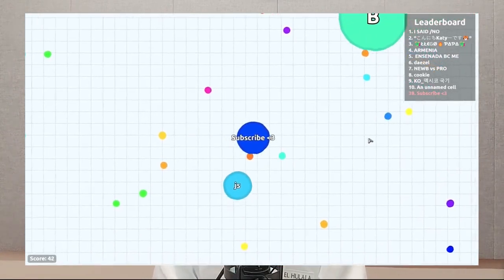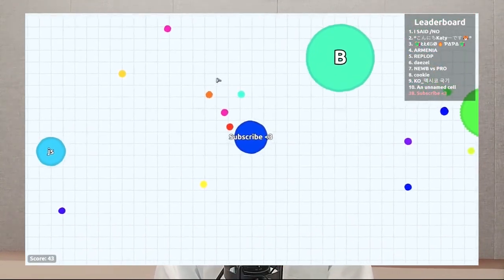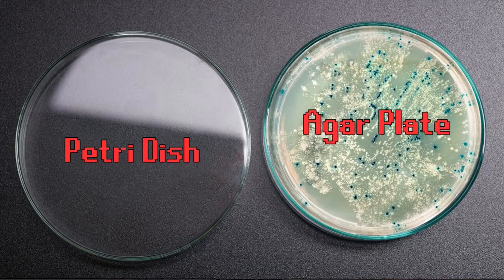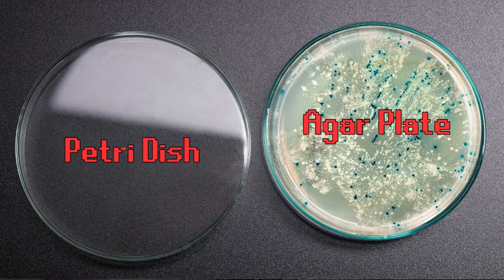We're also going to prep something called an agar plate. If you've played the game Agario, then you've probably been introduced to this concept before. An agar plate is basically just a material called agar, and bacteria grows on it. In the game, you're a bacterium eating other things on an agar plate. Also, don't mix this up with a petri dish. A petri dish is just a dish, the actual plate. You put agar in the petri dish to make an agar plate.